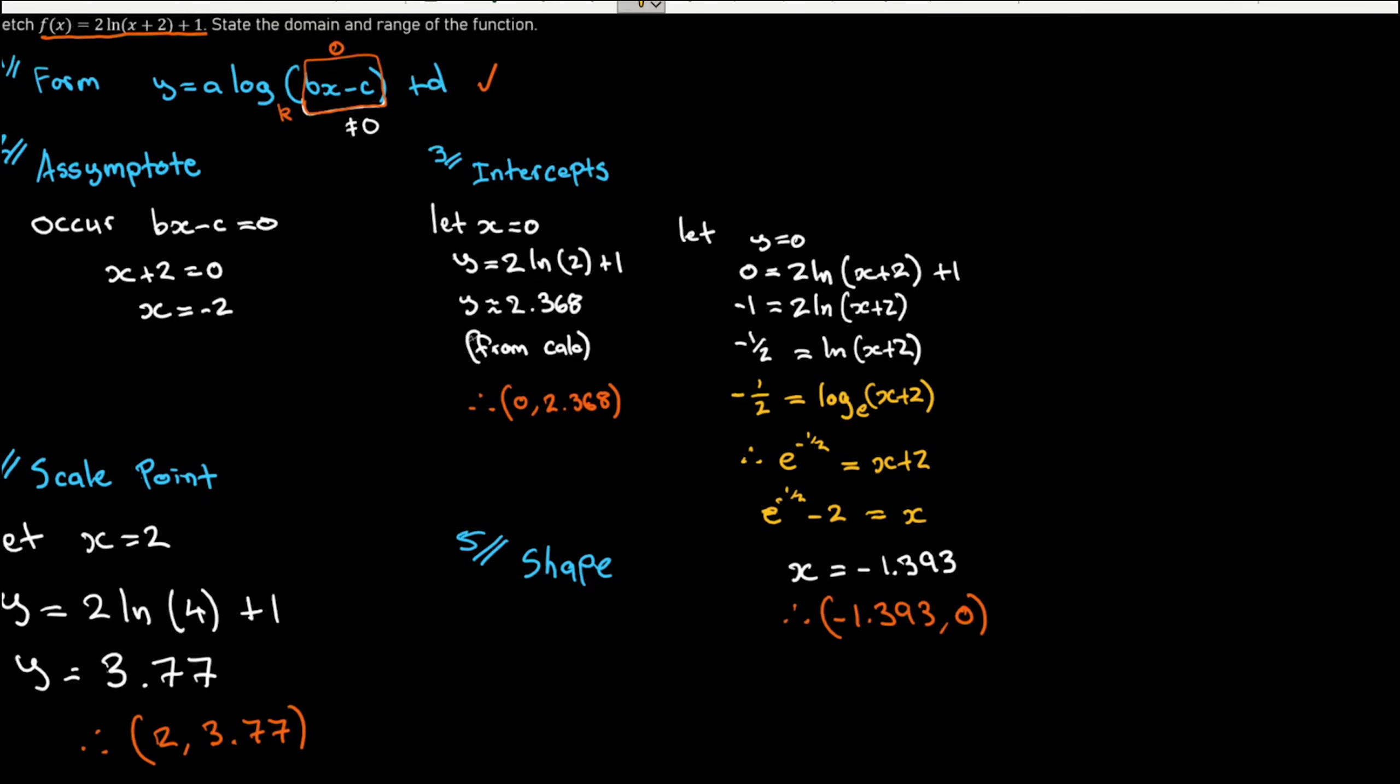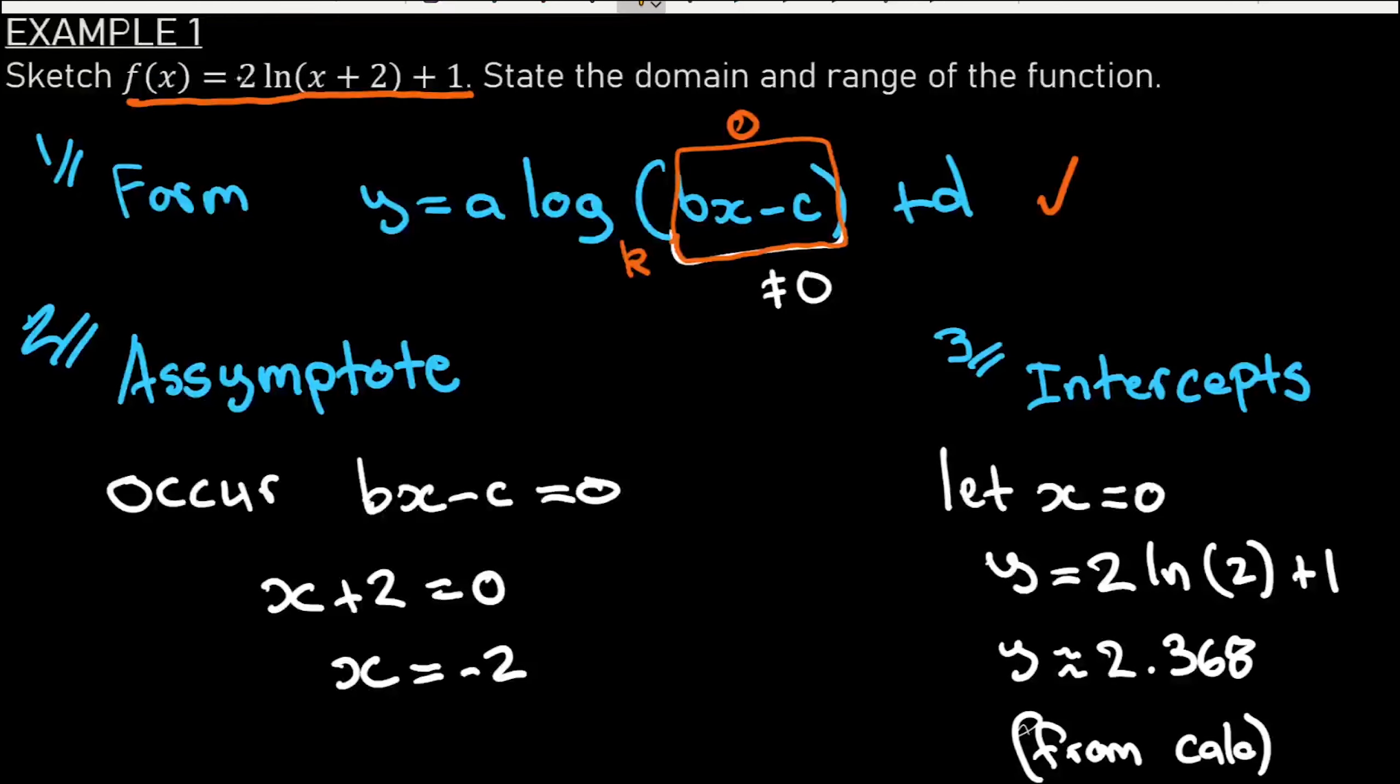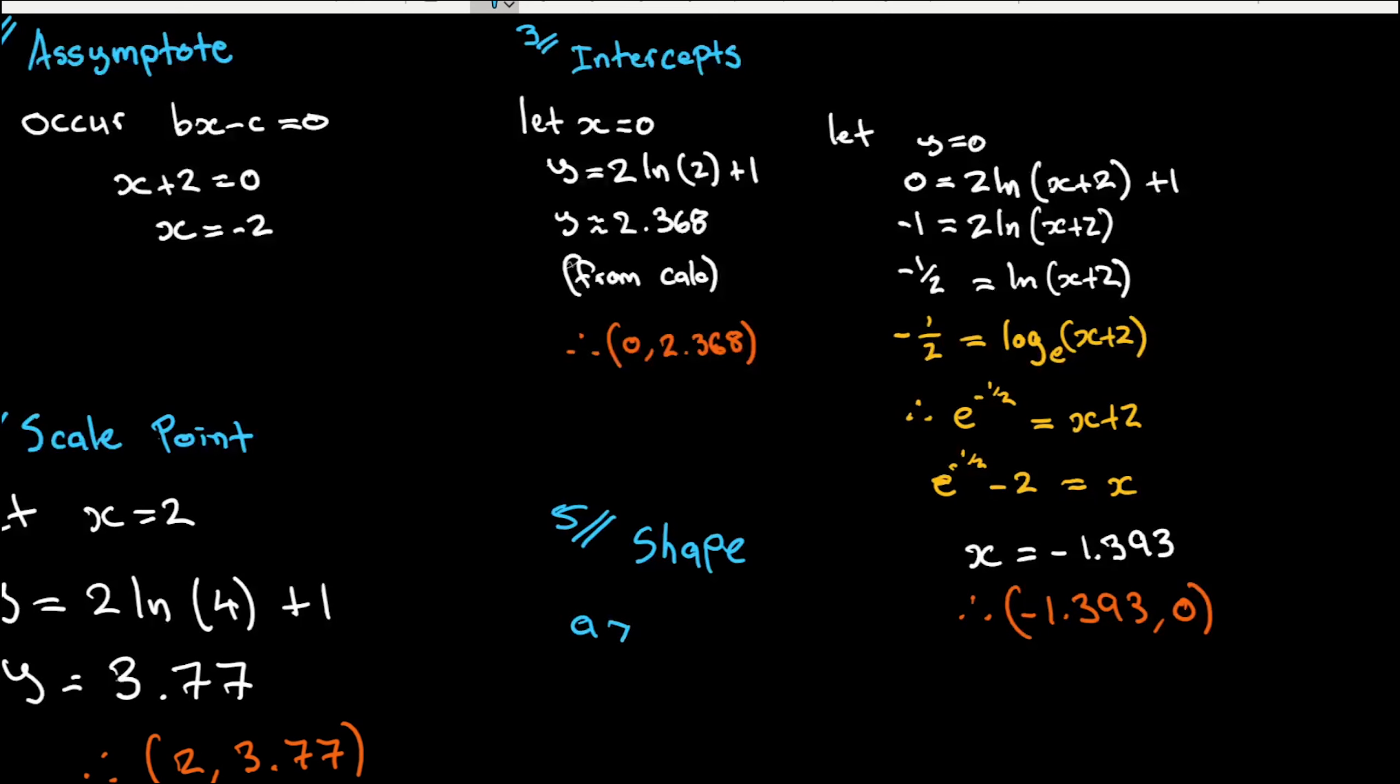Now here I'm looking at my original. I've got a is positive, and b, which is the number in here, which is just one, is also positive. A is positive, b is positive. Therefore, my log is going to look like that.